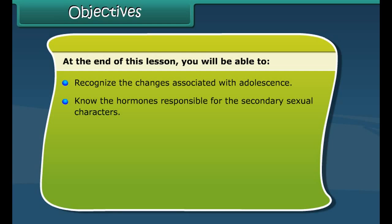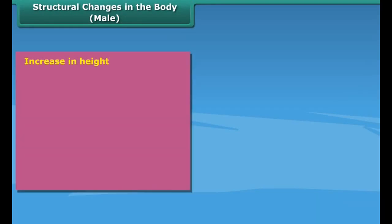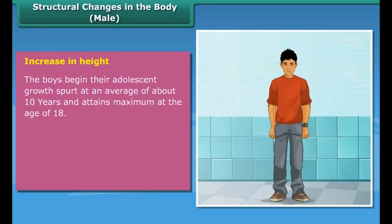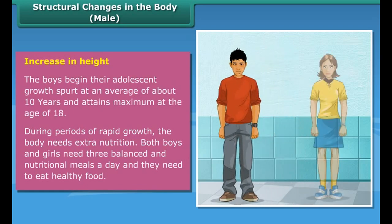Objectives: At the end of this lesson, you'll be able to recognize the changes associated with adolescence, know the hormones responsible for the secondary sexual characters, understand the reproductive phase in females, understand the process of sex determination in human beings, and realize the importance of reproductive health.